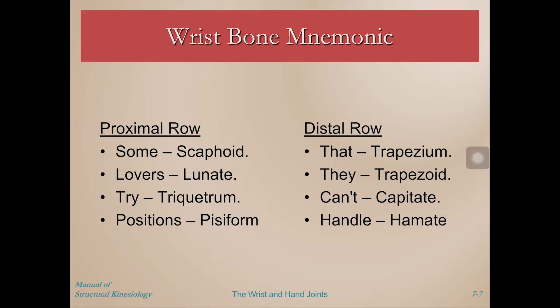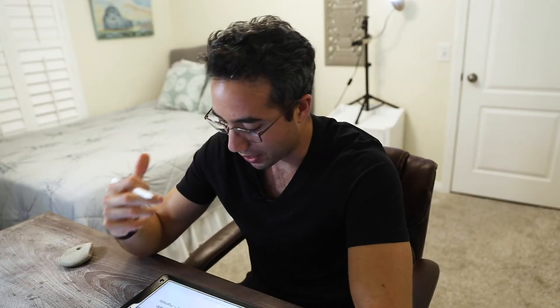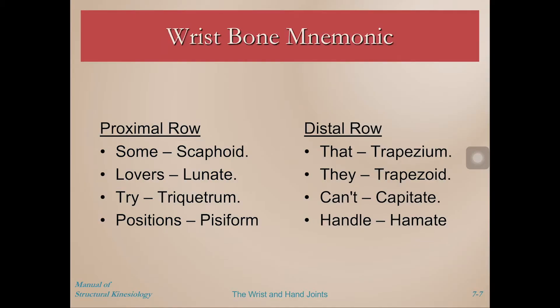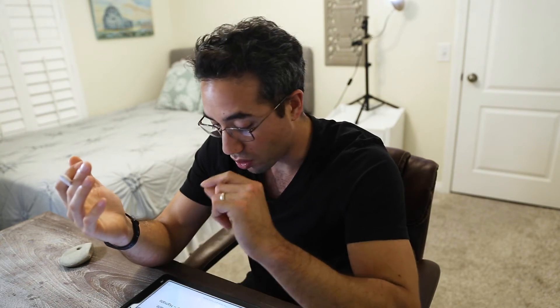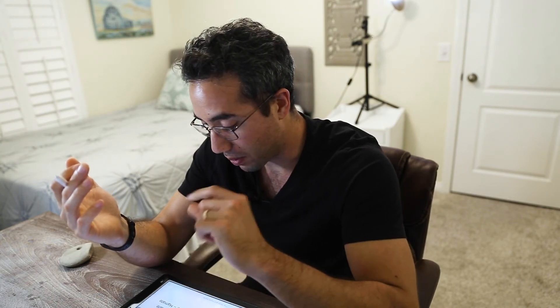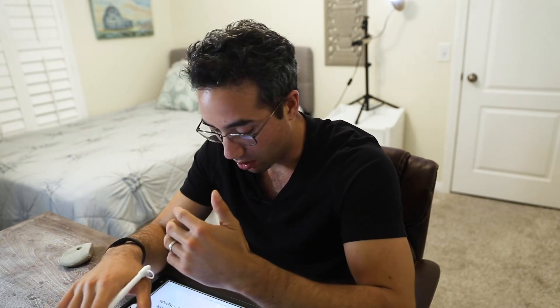An easy way to remember these is with a mnemonic. The one that most college students seem to remember is: 'Some lovers try positions that they can't handle.' The trick is remembering where they start and end — it goes from the radial side to the ulnar side, proximal to distal.